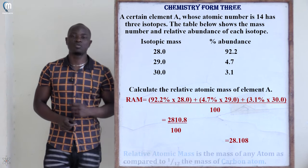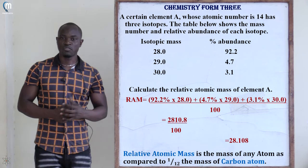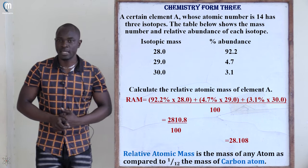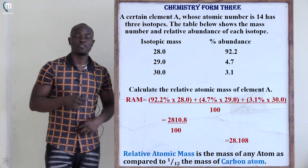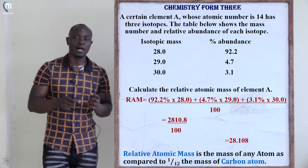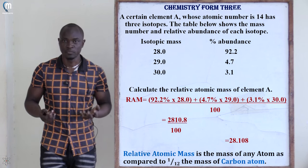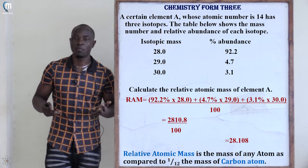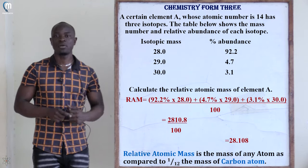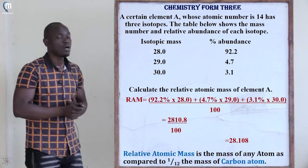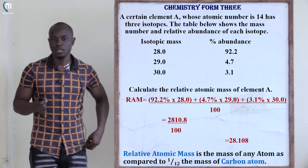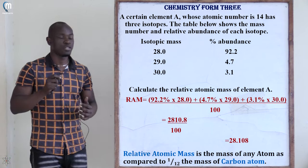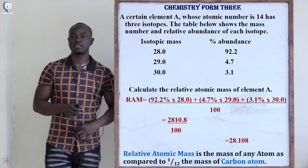If you have been asked to define relative atomic mass: the relative atomic mass of any element is the mass of that atom compared to one-twelfth of the mass of a carbon-12 atom. In this case our calculated relative atomic mass is 28.108.